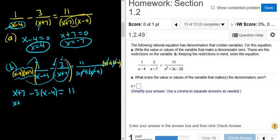So x plus 7. Distribute the minus 3, so you get minus 3x. And here negative 3 and negative 4 is positive 12. And that's equal to 11.